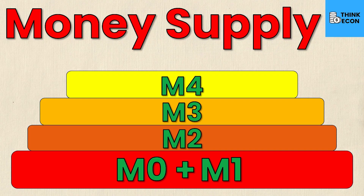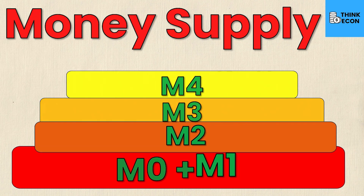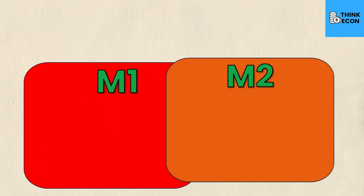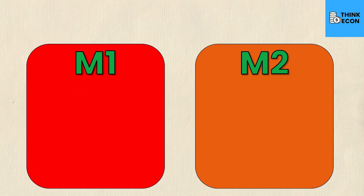So first things first, there are actually five different types of money supply: M0, M1, M2, M3, and M4, each denoting different levels of money. However, in a macroeconomics class we typically focus on two of them — that is M1 and M2.